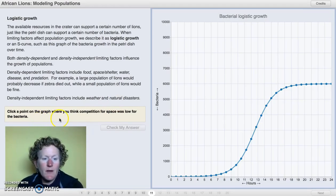Click a point on the graph where you think competition for space was low for the bacteria. This again is a logistic growth curve for bacteria. Where do you think they're not competing so much for space? When there are not so many bacteria, and there's kind of a lot of space in the petri dish. I'll give you a hint. It's pretty early in the history of the bacteria.